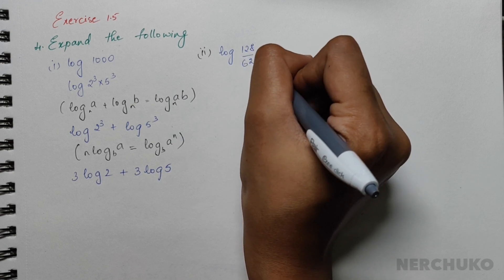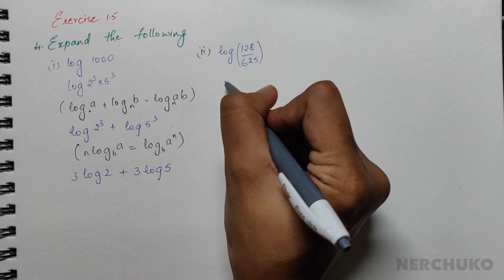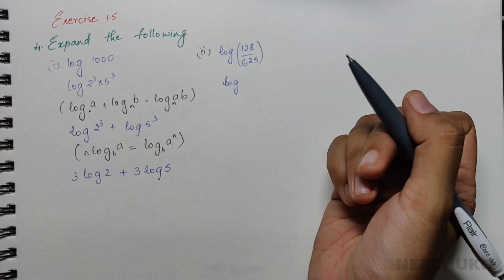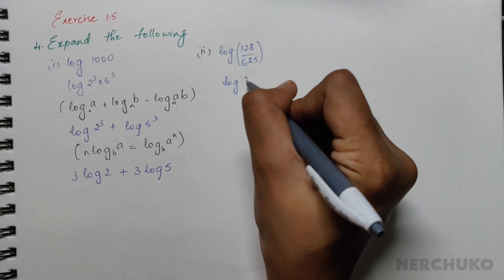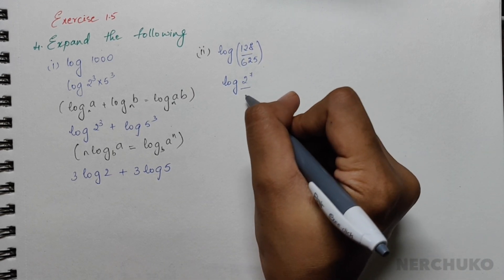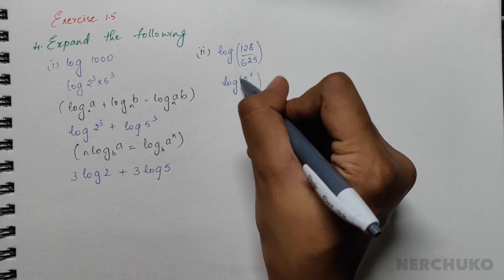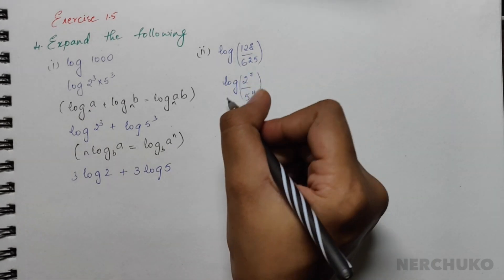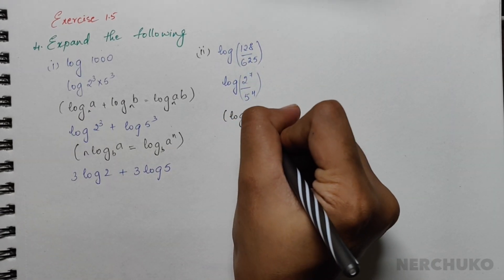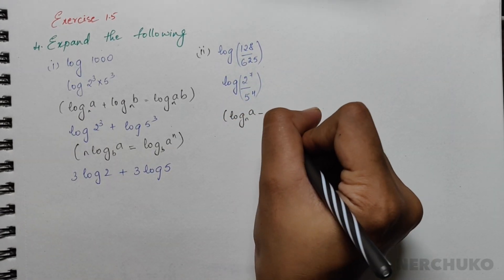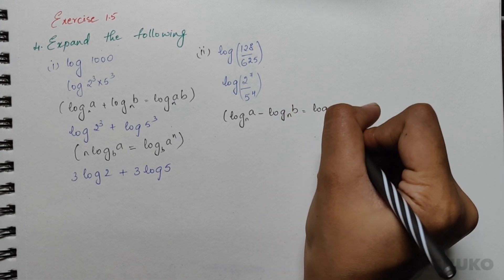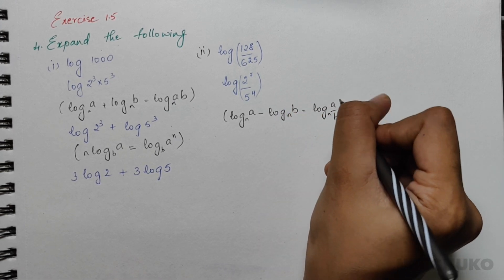For the second bit, I have log(128/625). 128 can be written as 2 to the power 7, and 625 can be written as 5 to the power 4. So this becomes log(2⁷ divided by 5⁴). For this I will use the formula log a minus log b equals log(a/b).